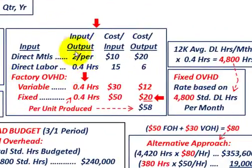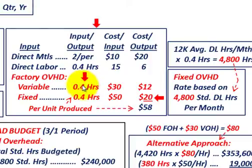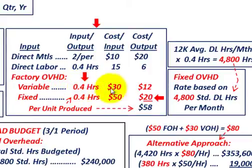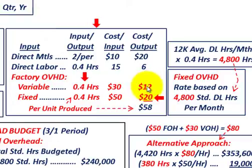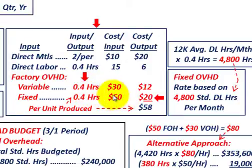For our variable factory overhead, on a per-unit basis, direct labor is 0.4 hours per unit. The variable overhead rate is $30 per hour, so 0.4 hours times $30 gives a variable overhead cost of $12 per unit. For fixed overhead, the rate is $50 per hour times 0.4 hours, giving a fixed overhead cost of $20 per unit.